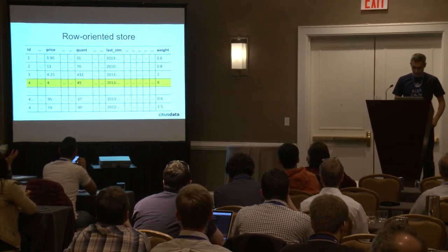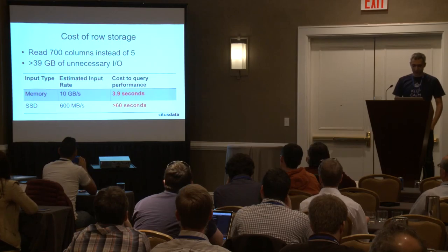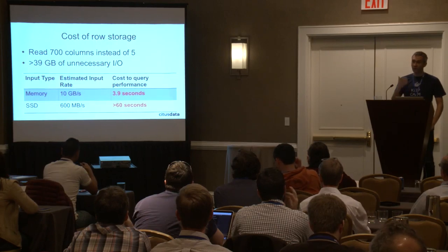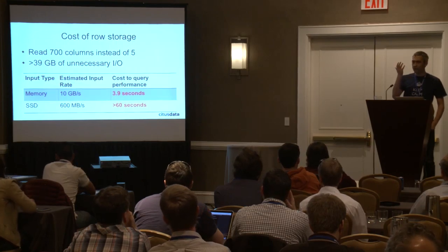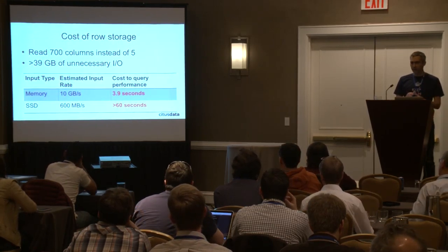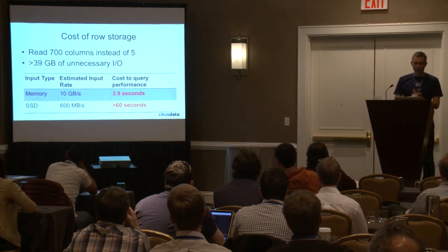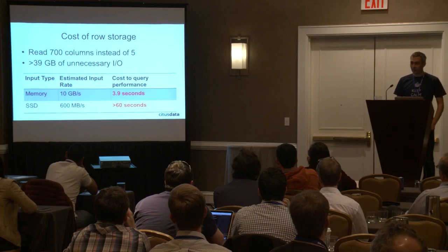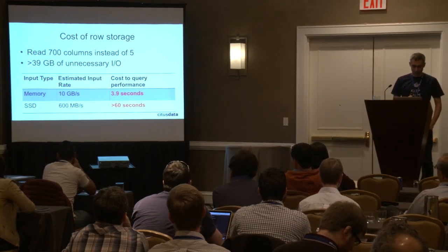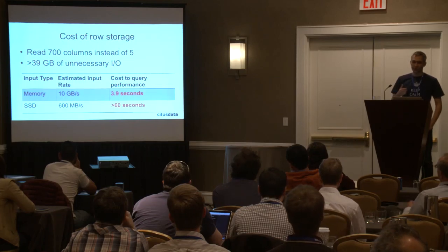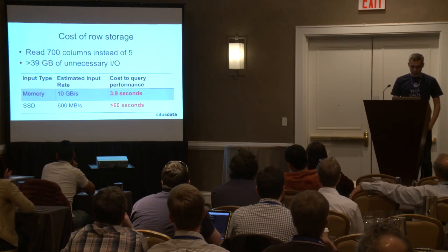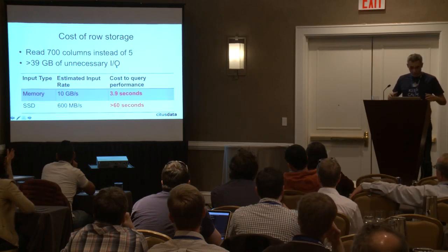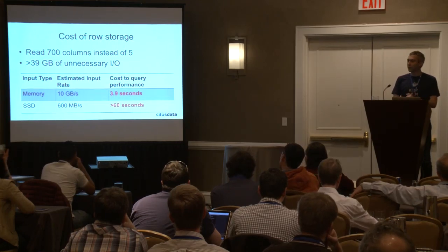The cost obviously is that in the example with 700 columns, we ended up reading all 700 columns but we only needed five of them. Their dataset size was 40 gigs, and we ended up reading more than 39 gigs of data that we didn't have to read. If you're using rotational disks, that's a lot of disk bandwidth. Even if you're using SSDs, you're still spending 60 seconds during the sequential scan reading all of these columns that you didn't need to read.